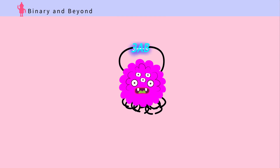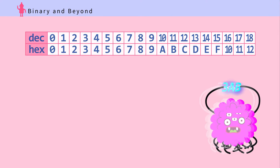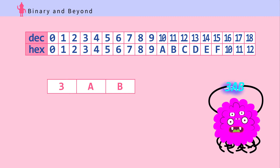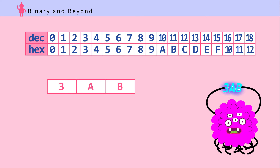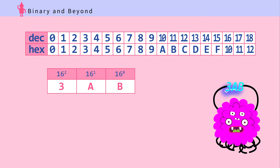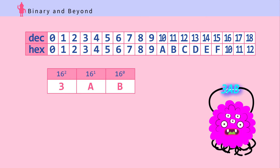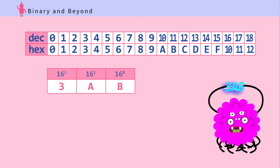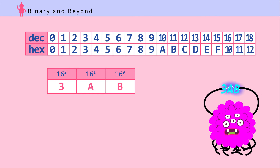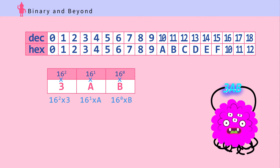This alien uses a hexadecimal system. Let's see what 3AB is in base 10 or decimals. Step one: lay out each digit — 3, A, and B. Step two: put the place value on top of each hex digit from the very right — 16 to the zero, 16 to the one, 16 to the two.